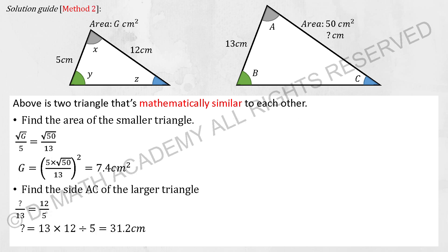Moving on to Method 2 for the same question. First, compare and put the areas at the top for both triangles. For area, you are required to square root it, so: square root of G over 5 as the denominator equals square root of 50 over 13. After calculation, you get G as 7.4.